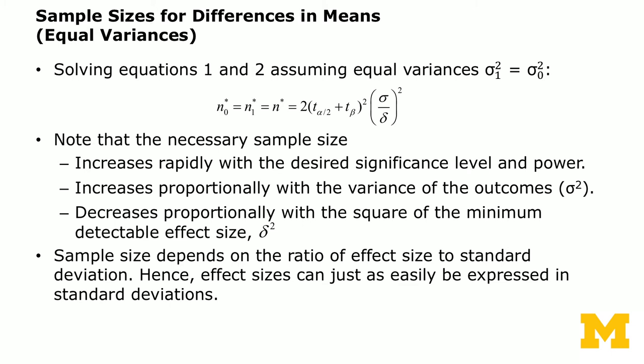In the simple case of equal variance — σ₁² = σ₀² — equating the two right-hand sides gives the optimal solution: you want equal sample sizes in treatment and control, both equal to n*. That equals 2 times (t(α/2) + t(β))² times the (σ/δ)² ratio.